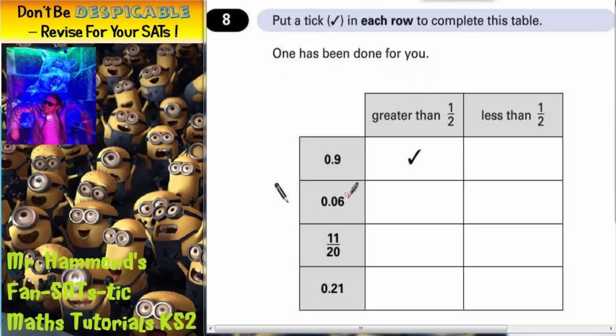So we've got 0.9, 0.06, 11 twentieths, or 0.21. We've got to choose whether it's greater than a half or less than a half.